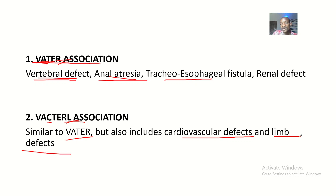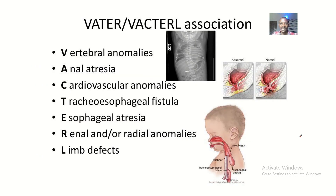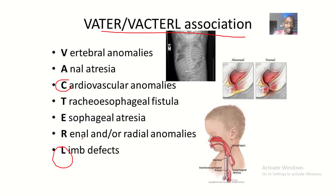VATER and VACTERL are basically a list of different congenital defects of the body. The key difference is that VACTERL has an added C and an added L, making VACTERL a larger concept when compared to VATER.